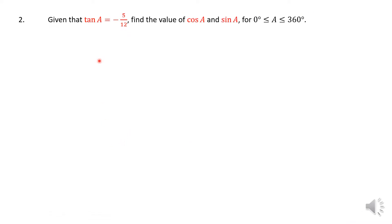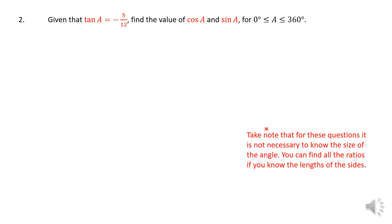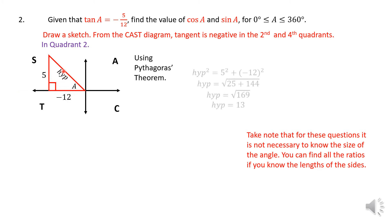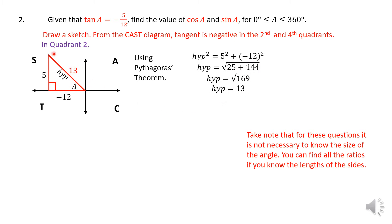Question 2: given that tan a equals negative 5 over 12, find cos a and sin a. The domain is between 0 and 360 degrees. We are not looking for the angle itself — we want cos a and sine a. The tangent ratio is negative in the second quadrant and the fourth quadrant, because it's positive in the first and third. Starting with the second quadrant: tangent is opposite over adjacent, so opposite is 5 and the adjacent is negative 12. Using Pythagoras' theorem, the hypotenuse is 13.